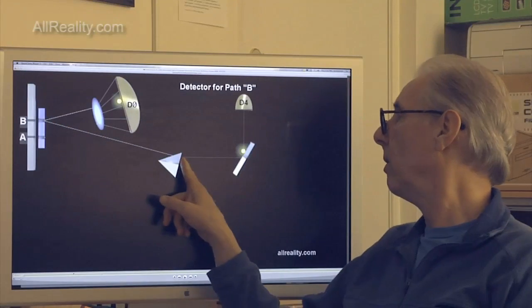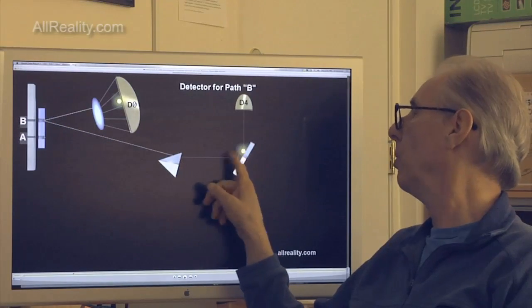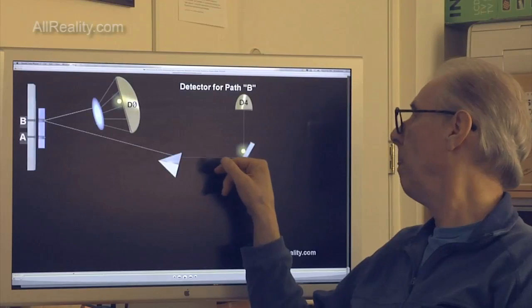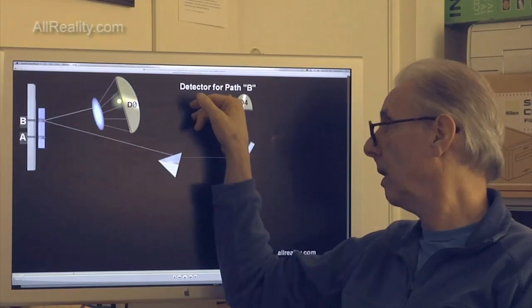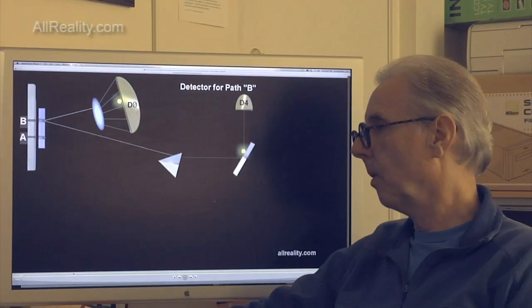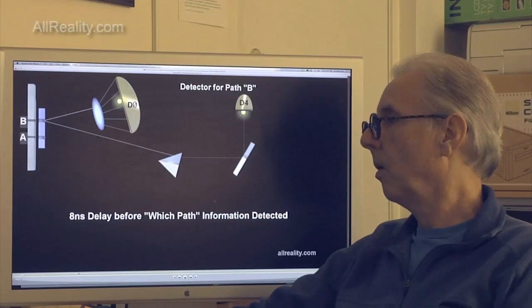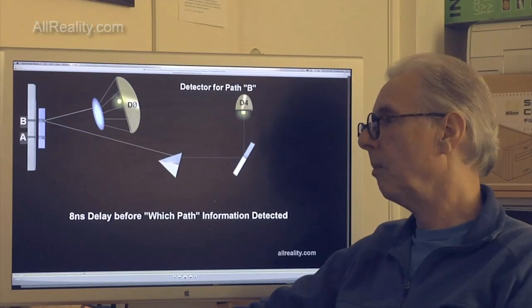The other half of the pair takes a much longer route, goes through a prism, hits a half-silver mirror, and gets detected. And there's an 8-nanosecond delay.